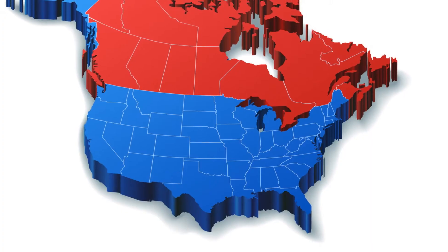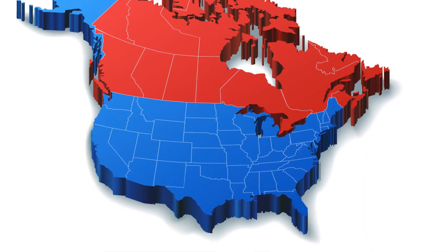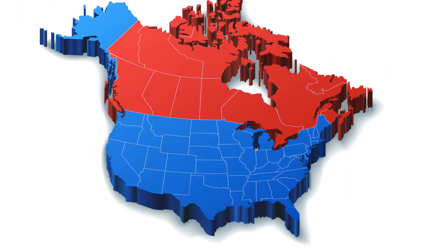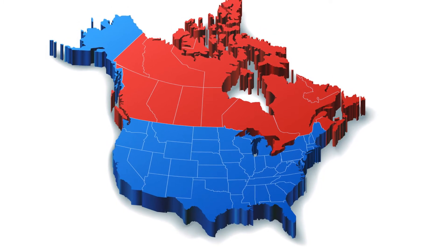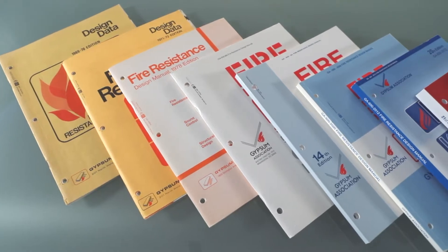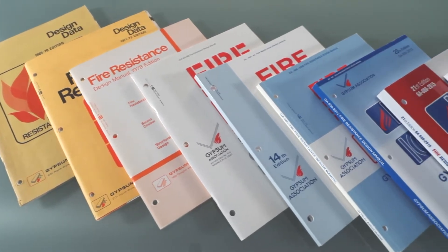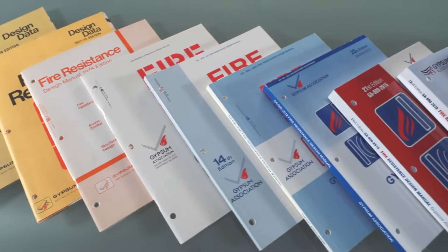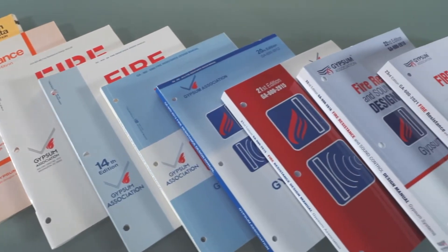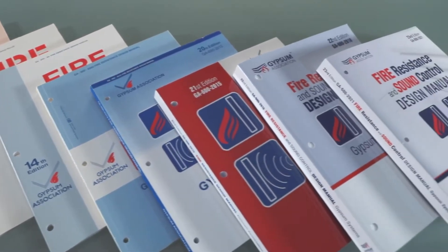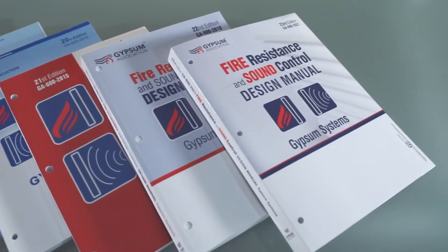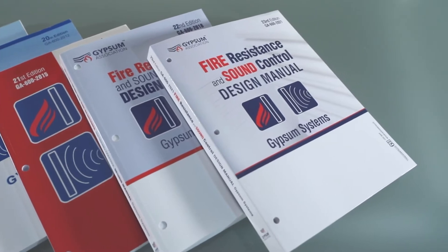GA600 is also referenced by the codes of major jurisdictions in the United States and Canada. For more than 50 years, GA600 has been known as the best organized and easiest to use of the fire design reference books.